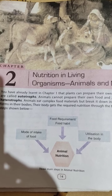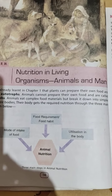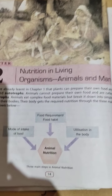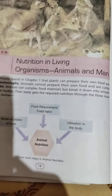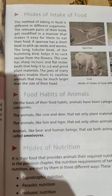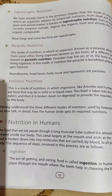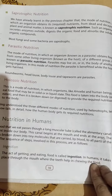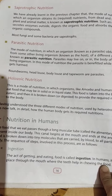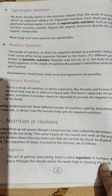Good morning class 7. We are doing chapter number 2 of your science book, that is Nutrition in Living Organisms: Animals and Man. We have done up to the three main steps of animal nutrition: mode of intake of food, food habits of animals, and modes of nutrition. We have also covered saprotrophic, parasitic, and holozoic nutrition. In this chapter we will study about holozoic nutrition in man.